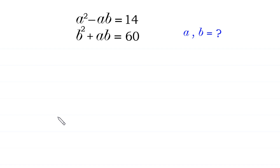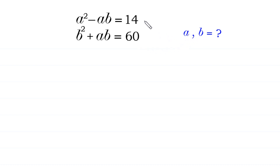Hello, welcome to how to solve these equations for a and b. a squared minus ab is equal to 14, and b squared plus ab is equal to 60. We need to find all possible values of a and b. We name the first equation 'Equation 1' and the second equation 'Equation 2'.